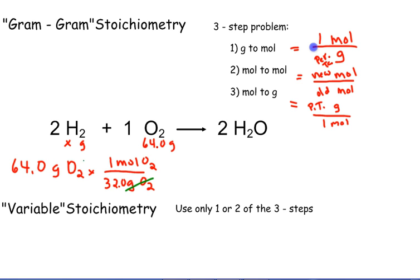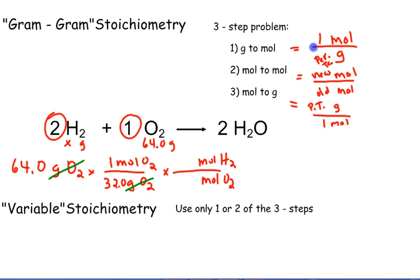If you stopped the problem here, since grams of O2 cancel, your unit is now in moles of O2. But we're trying to find grams of hydrogen, so now that we are in moles of O2, we use the coefficients — which represent a mole ratio — to convert from moles of O2 to moles of hydrogen. The middle fraction puts moles of O2 in the denominator so it cancels, and moles of H2 in the numerator. The coefficients from the balanced equation give us 2 over 1.